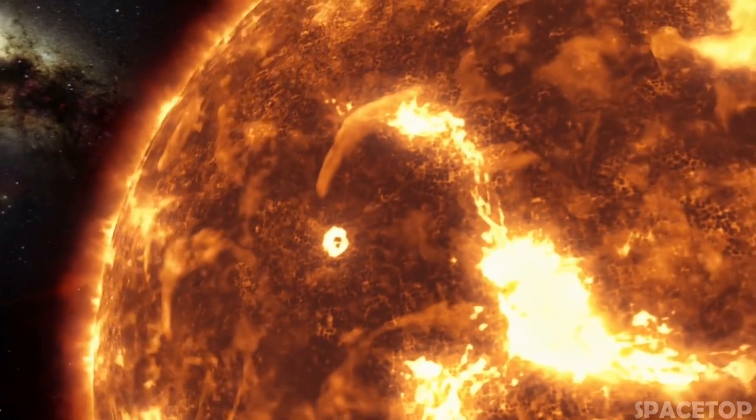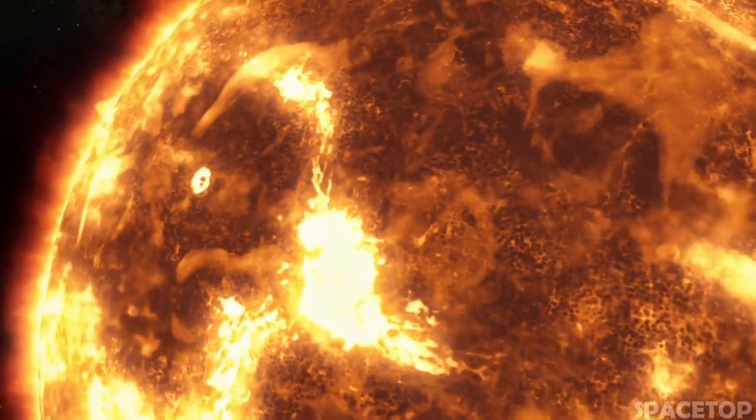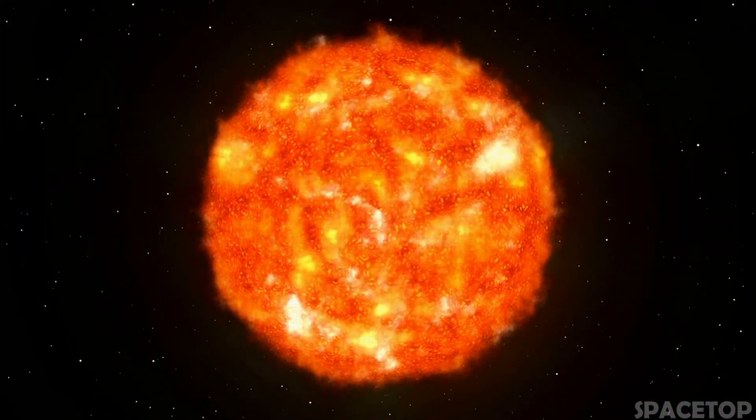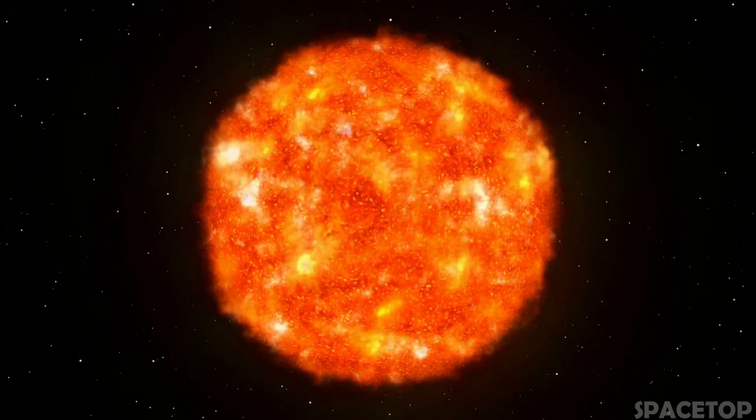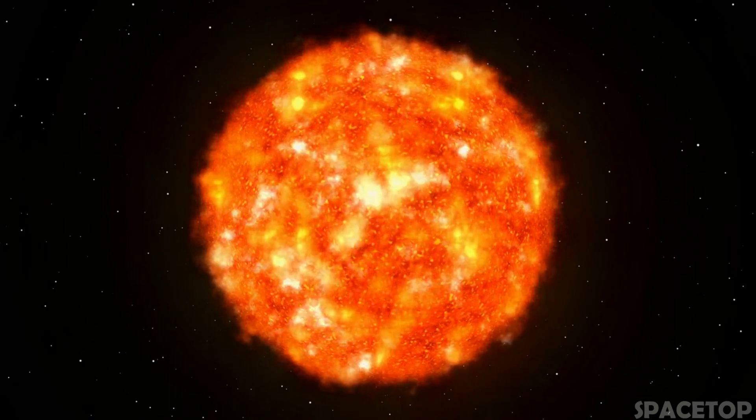Before we try to figure out what was going on, it would be nice to know what Betelgeuse looks like. This object belongs to the category of red supergiants and is at the final stage of its life cycle, according to the modern theory of stellar evolution.